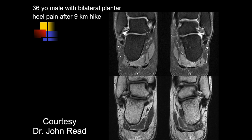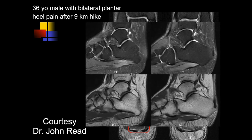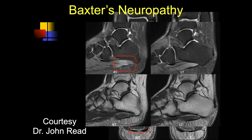A 36-year-old male with bilateral plantar heel pain after a 9-kilometer hike. We have images of the bilateral calcaneus. There is some muscle edema, greater on the left than the right. This could be some type of neuropathy, overuse, or muscle strain injury after a hike of this length. This is acute Baxter's neuropathy, where the edema we're seeing is thought to be from acute trauma hurting the nerve.